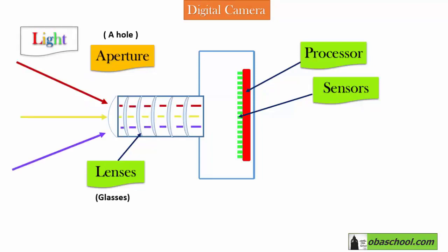The light will enter through the aperture, which is at the beginning of the camera, and it will pass through the lenses inside the camera to reach the sensors. When it reaches the sensors, these sensors will send the data to the processor to process it.